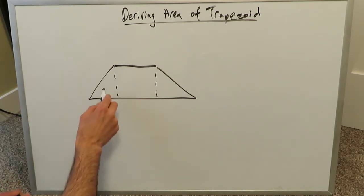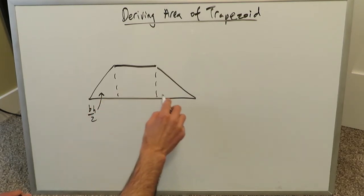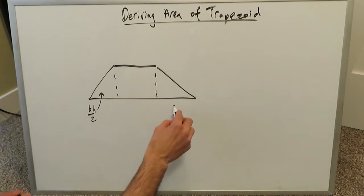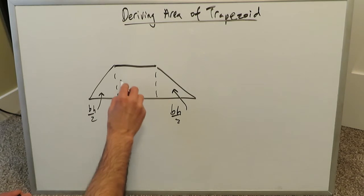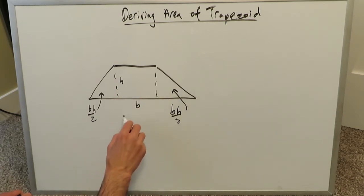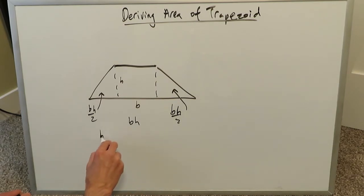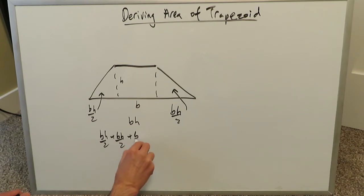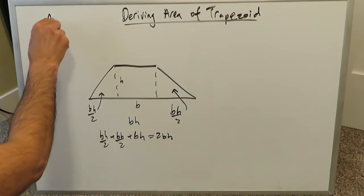For this specific trapezoid, if you were to calculate the area, you have a triangle and a triangle. You'd have base times height over 2 for each triangle, and then a base times height for the square in the middle. The cumulative effect gives you bh/2 plus bh/2 plus bh, which becomes bh plus bh, giving you 2bh. That represents the area for this trapezoid.